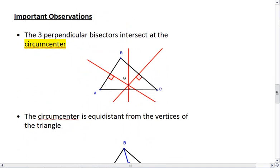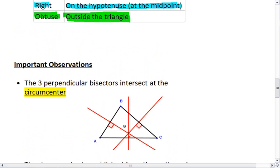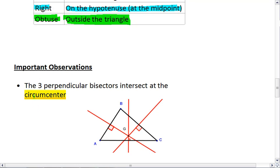Here is our list of important observations. First, the three perpendicular bisectors are concurrent, and they intersect at the point called the circumcenter.